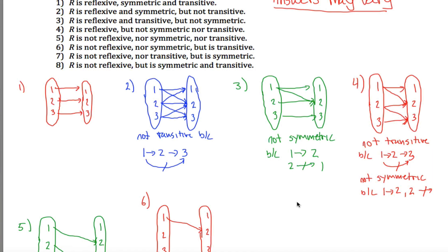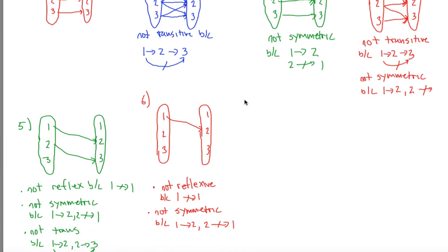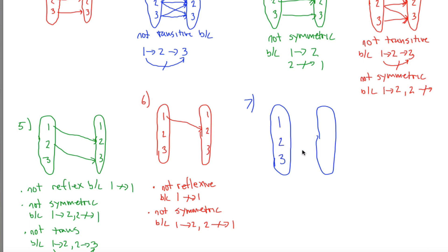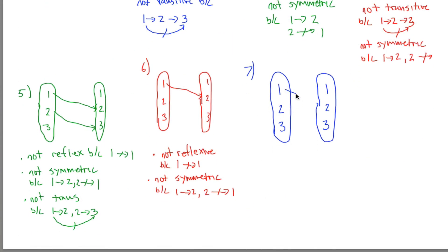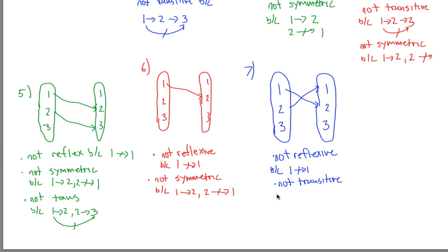Number seven: not reflexive, not transitive, but symmetric. I draw two sets with three elements each. Since it's symmetric, if I put an arrow from one to two, I better also have an arrow from two to one. I want it to not be reflexive — there's no arrow from one to one. I want it to not be transitive — there's an arrow from one to two and from two to one, but nothing from one to one. This is symmetric, but it's not reflexive and not transitive because there's an arrow from one to two and two to one but no arrow from one to one.